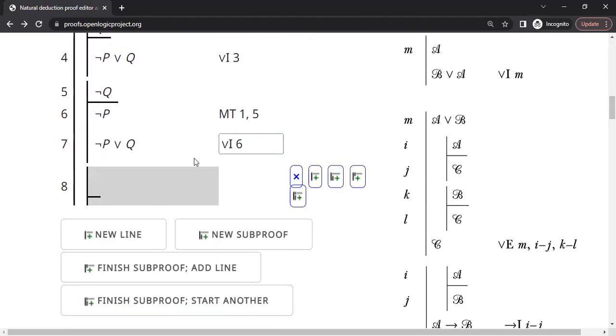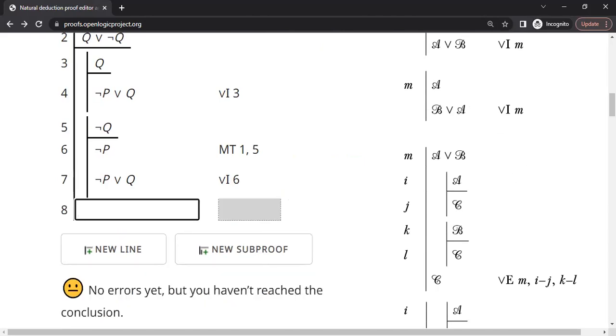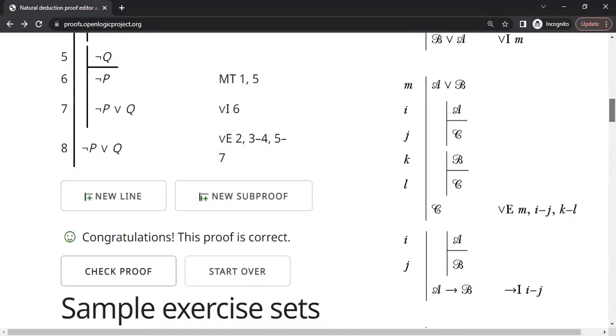So now this is add a new line to the parent of the proof. We have NOT P or Q because of the OR elimination rather. Line number 23457. Okay. Let's check the proof. Congratulations. The proof is correct.